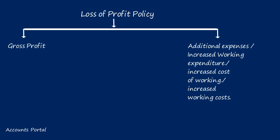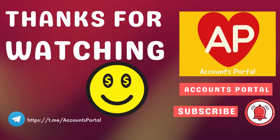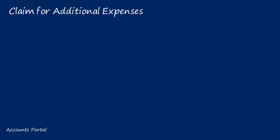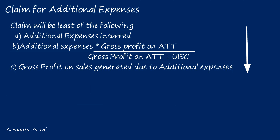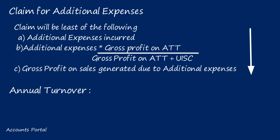Now the question arises: is there any ceiling limit for additional expenses? Yes. The claim for additional expenses will be the least of the following: additional expenses incurred; additional expenses into gross profit on AAT divided by gross profit on AAT plus uninsured standing charges; and gross profit on sales generated due to additional expenses. AAT stands for Adjusted Annual Turnover, which means sales during the 12 months immediately preceding the date of fire.